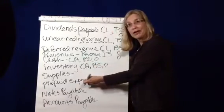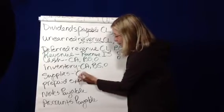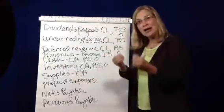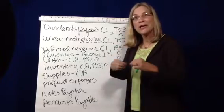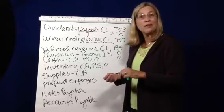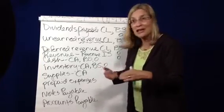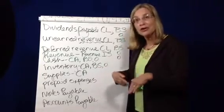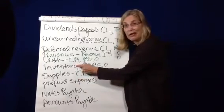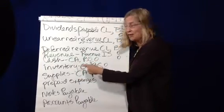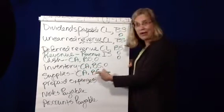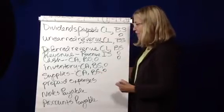The difference between inventory and supplies is, while they're both current assets, supplies are when you buy stuff and you use it internally in the business. So like office supplies, things that on a day-to-day basis you use or consume inside your business, rather than slapping a price tag on them and selling them to customers. So because it's a current asset, you see the theme, it's on the balance sheet, and it's in the operating section.